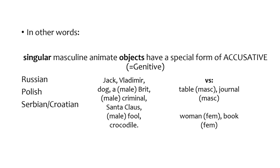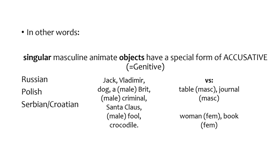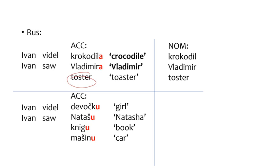The words woman and book are feminine. They do have accusative case marking, but the morphology does not encode animacy. In other words, it is immaterial whether a feminine noun is animate or not. Russian demonstrates this pattern nicely. Crocodile, Vladimir, and Toaster are all masculines, which one can glean from the morphological shape of these nouns in the nominative case — they all end in a consonant.